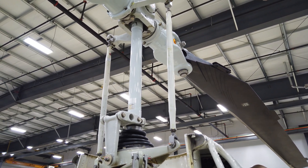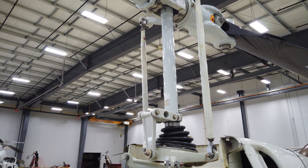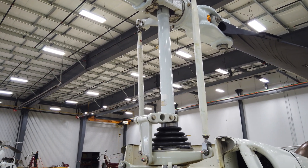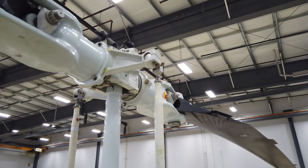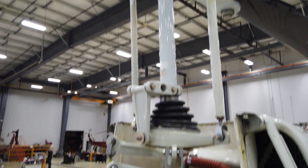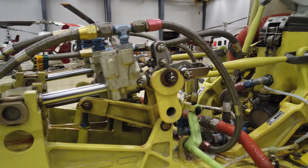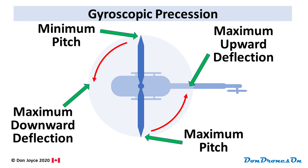Hence the name of the control stick: the cyclic. And since the pitch determines the amount of lift, there's a difference in the lift from one side of the craft to the other — and that's how the helicopter tilts. One little curiosity: due to a physical phenomenon called gyroscopic precession, the higher lift actually needs to be generated 90 degrees ahead of where you want the tilt.